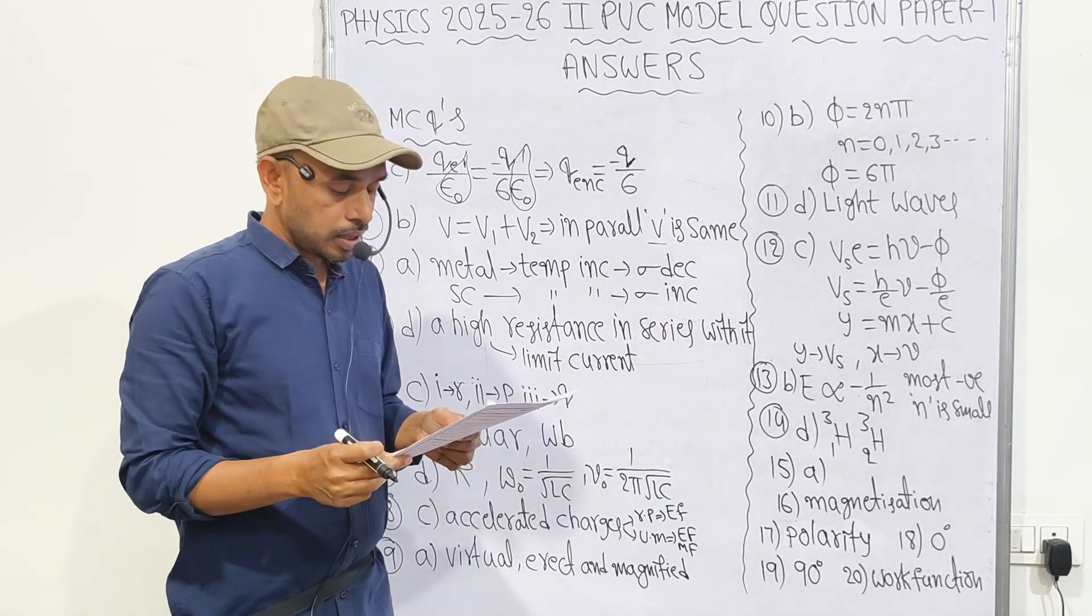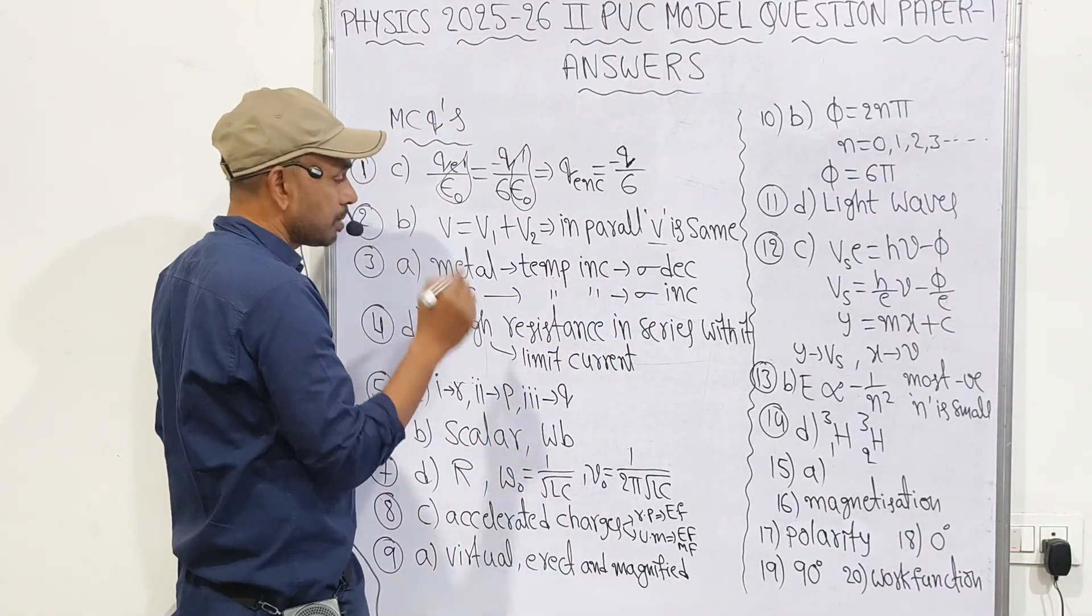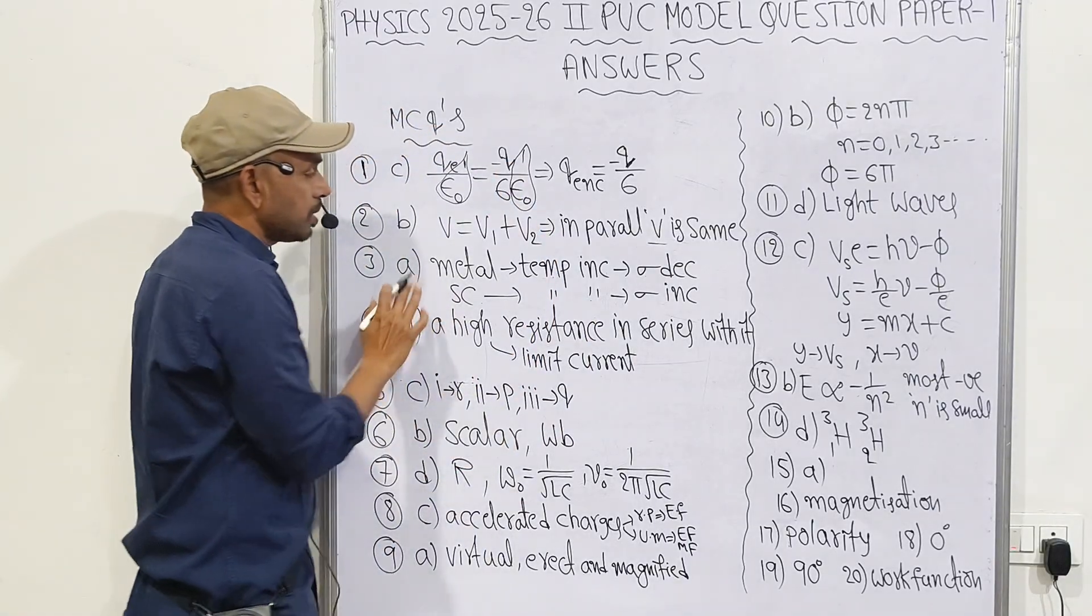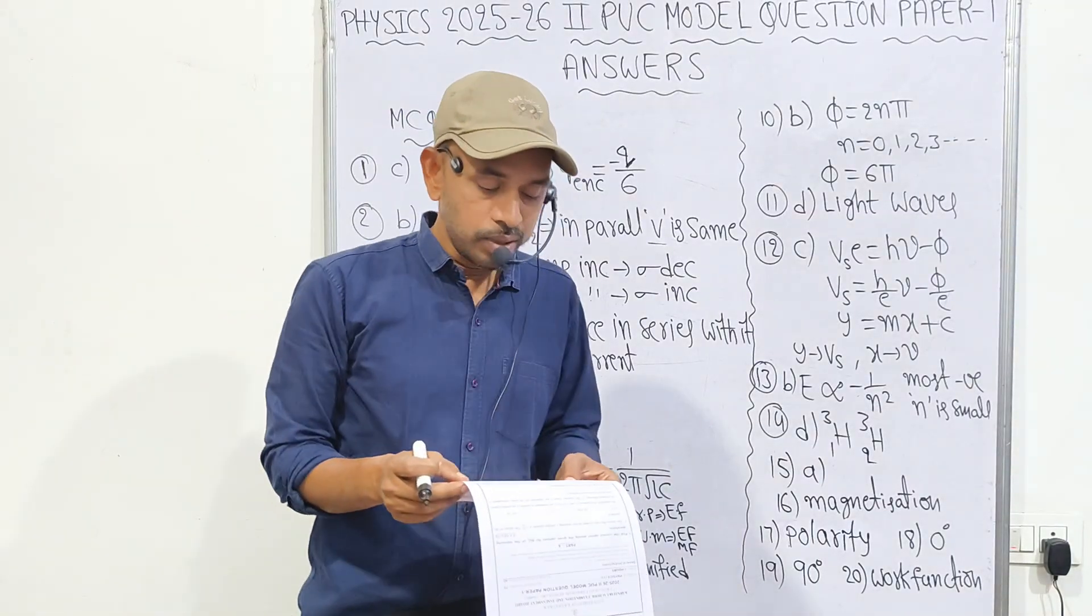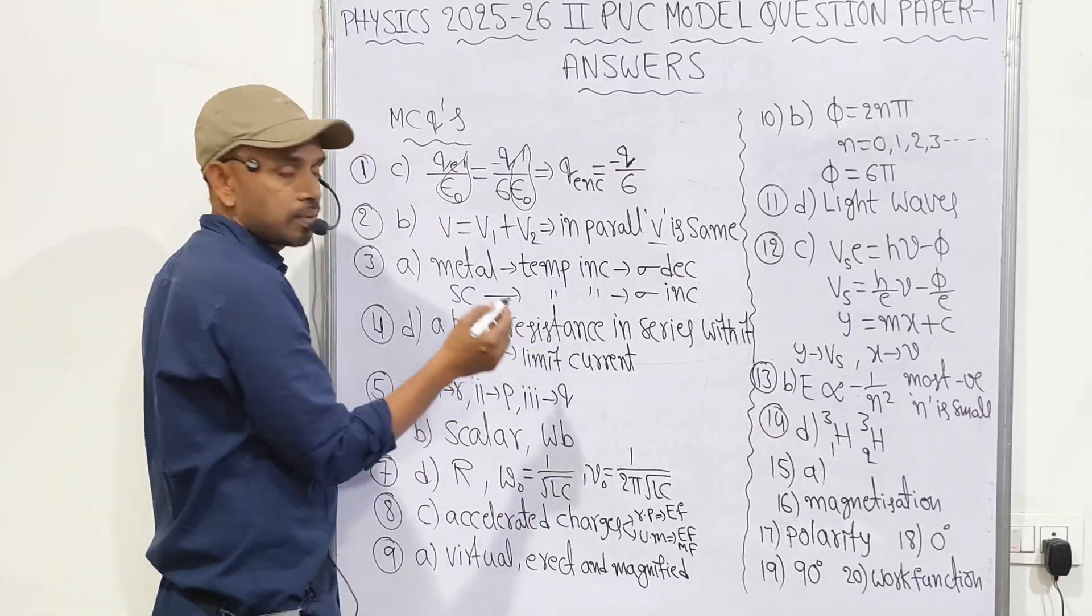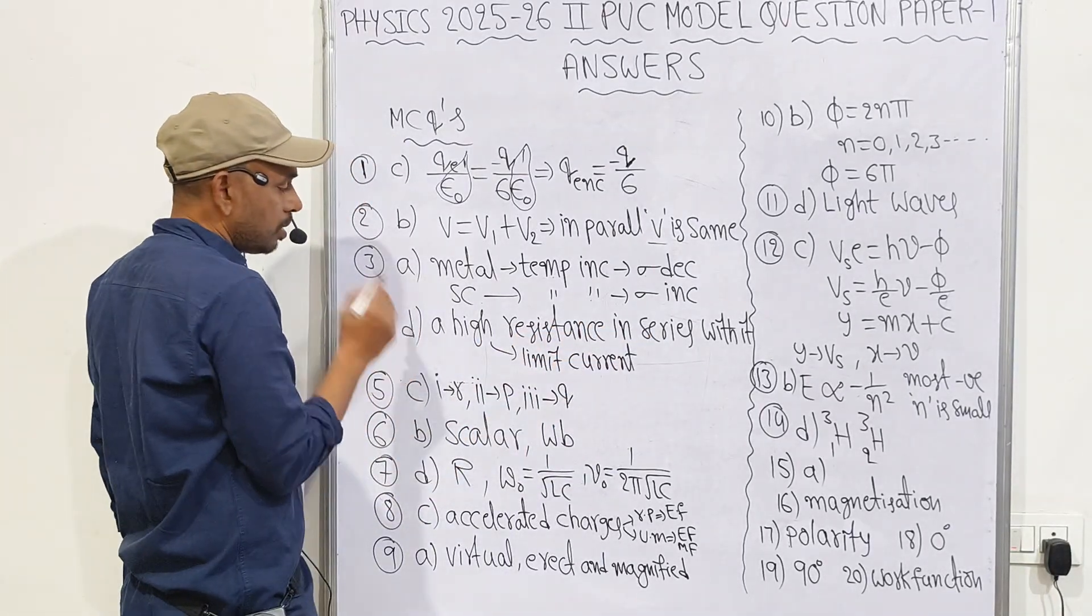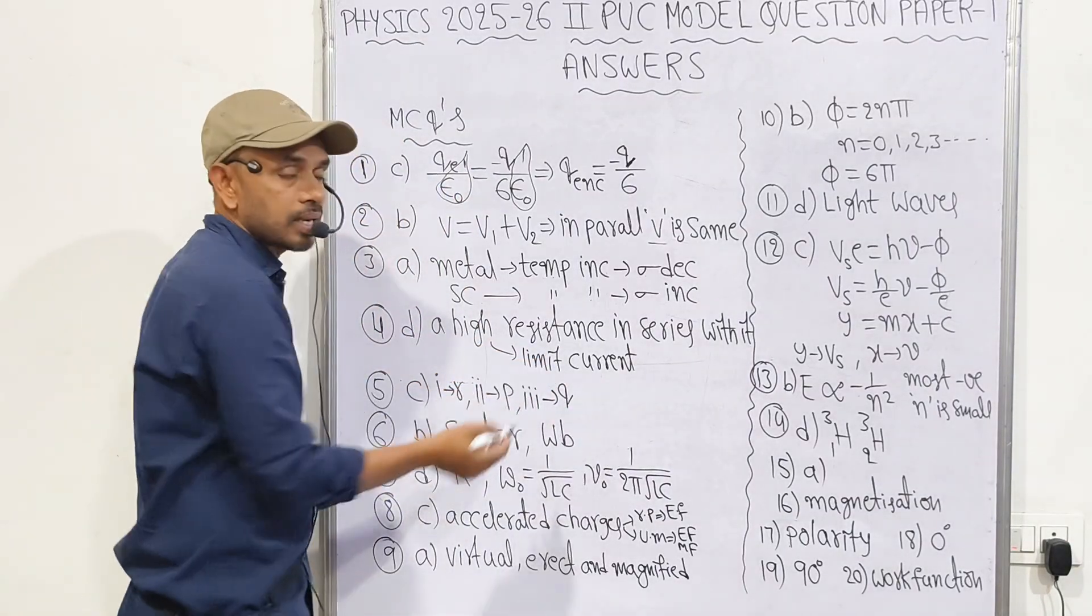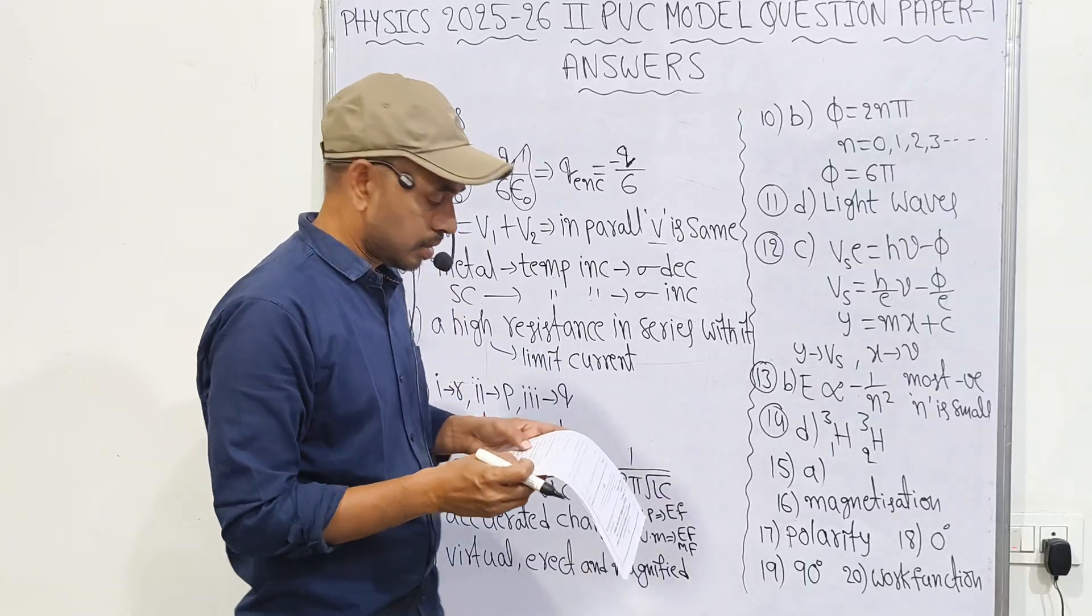In case of metals, with increase in temperature conductivity decreases. In semiconductors, temperature increases means conductivity increases. That's why option A is correct. Next, fourth one: a galvanometer can be converted into a voltmeter by connecting a high resistance in series with it. Remember, galvanometer to voltmeter needs high resistance in series. To ammeter means low resistance. Here, high resistance limits current so we can measure voltage easily. Final option for fourth question is D.